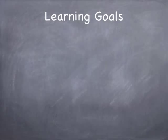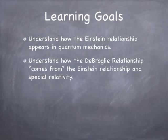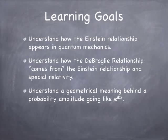First of all, let's talk about some learning goals. The first is to understand how the Einstein relation appears in quantum mechanics. Second, understand how the de Broglie relationship actually comes from the Einstein relation in special relativity. We're going to develop a geometrical interpretation of the amplitude e to the ikx, e to the minus i omega t. We've already talked about e to the minus i omega t. We haven't yet really addressed e to the ikx, so we're going to talk about that today.